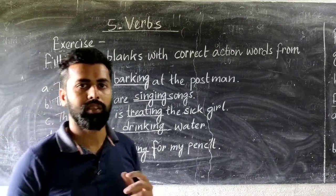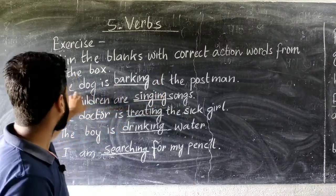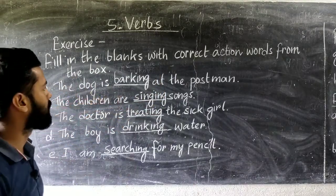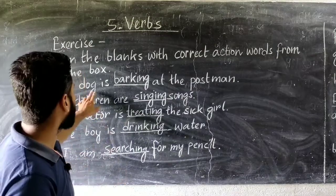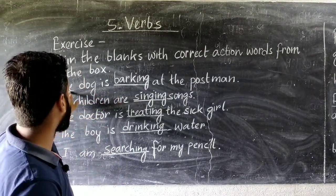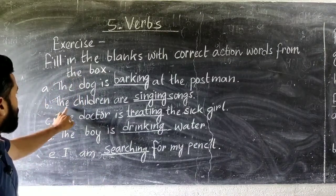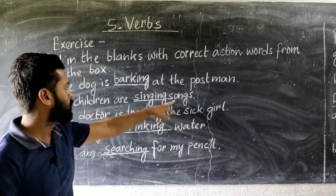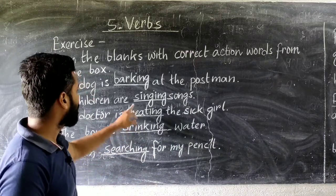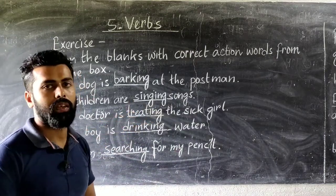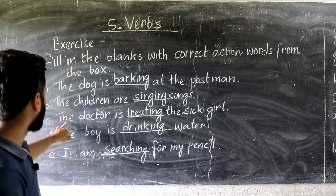First, you see the dog is dash at the postman. So here you will write barking. The dog is barking at the postman. Next, the children are dash song. You have to write here singing. The children are singing a song.